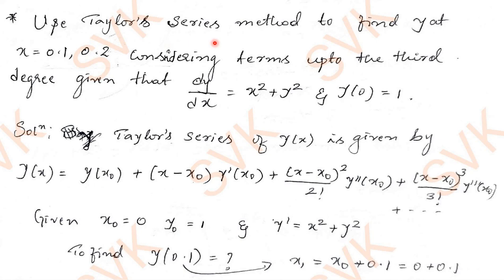Use Taylor series method to find y at x = 0.1 and x = 0.2, considering terms up to third degree — meaning up to y'''(x₀). Given: dy/dx = x² + y², with initial condition y(0) = 1. This matches the standard form dy/dx = f(x, y) with initial condition y(x₀) = y₀.